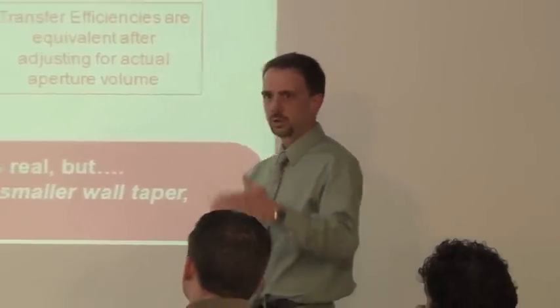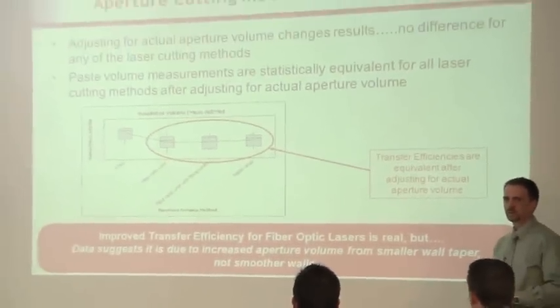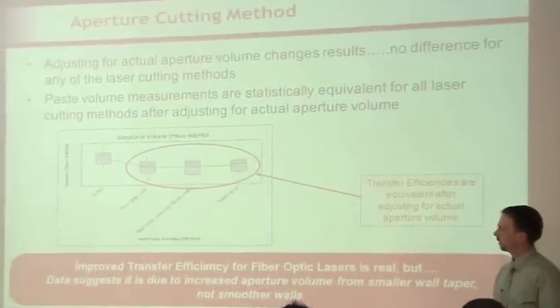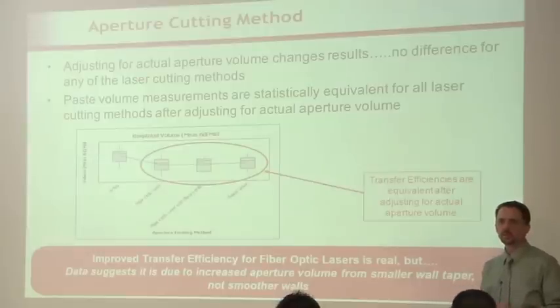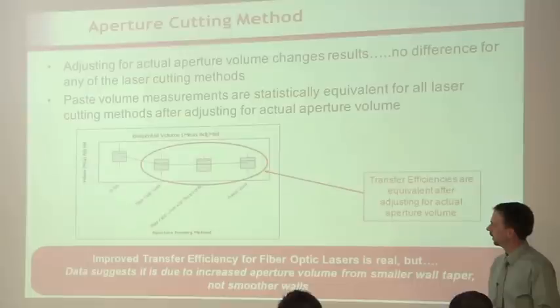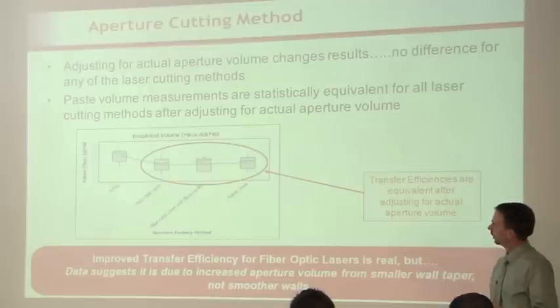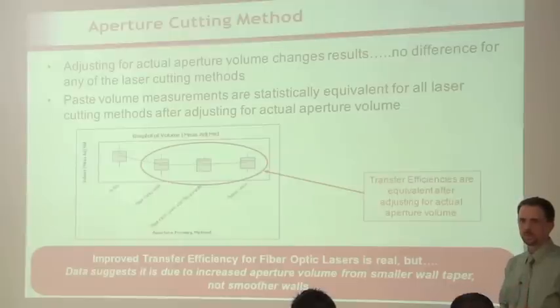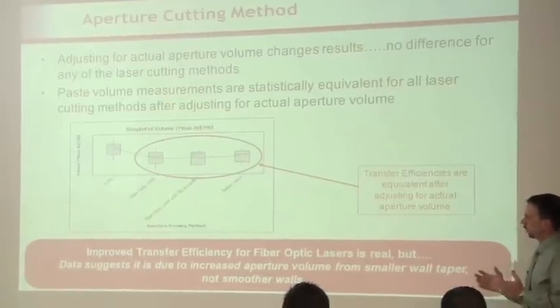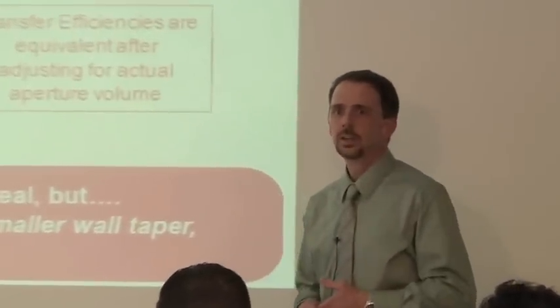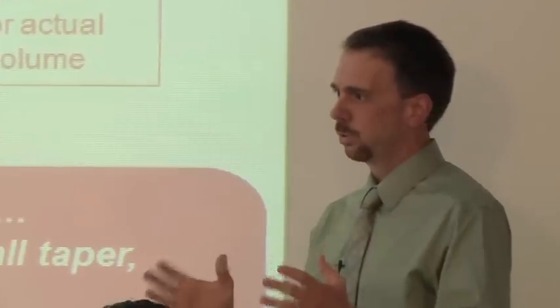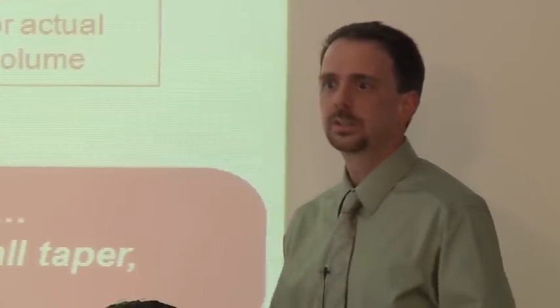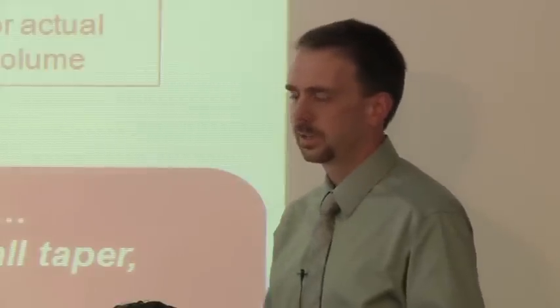You remember that chart I showed a couple of slides back where we were looking at the different cutting methods, where we had the nice expected results for the different types of cutting methods? Well, once we normalize for the actual aperture size, suddenly it looks a little bit different. EFAB looks about the same - our data shows that it still releases better. But look at all the different cutting methods. The fiber optic, the fiber optic with electropolish and the pulsed, they're all the same. So what's that mean? Basically, they're all equivalent once you adjust for the actual volume that you have in that aperture. We believe that the increased transfer efficiency for these fiber optic lasers is real. I'm just not so sure that it's because of the smoother walls. Our data would seem to suggest that it has a little bit more to do with the actual real volume of that aperture. You're just able to print more paste on the board because of that than it has to do with the ability for that stencil to let go of the paste and leave it on the board.